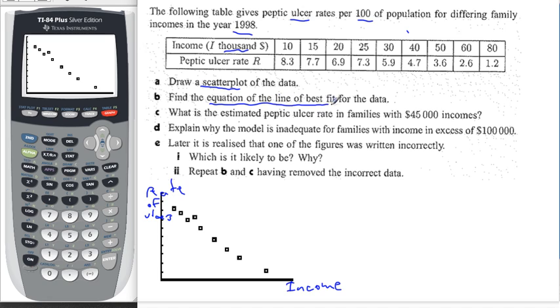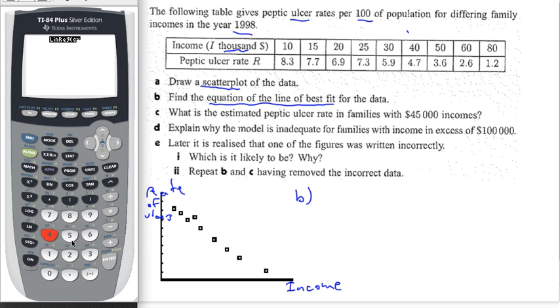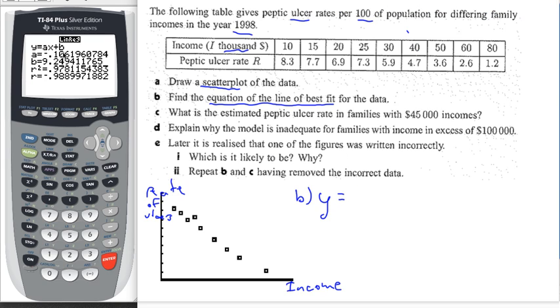Now we need to find the equation of the line of best fit. We're going to find the regression equation and let the calculator do that. Go to stat, go over to calc, and we want linear regression, so hit number four or scroll down to it. Some calculators don't display L1 and L2 with the new operating system. Our slope is negative, which we expect because as income increases, the rate of ulcers decreases. So this equation is y equals negative 0.106 times x plus 9.25 for the y-intercept. That is my regression equation.